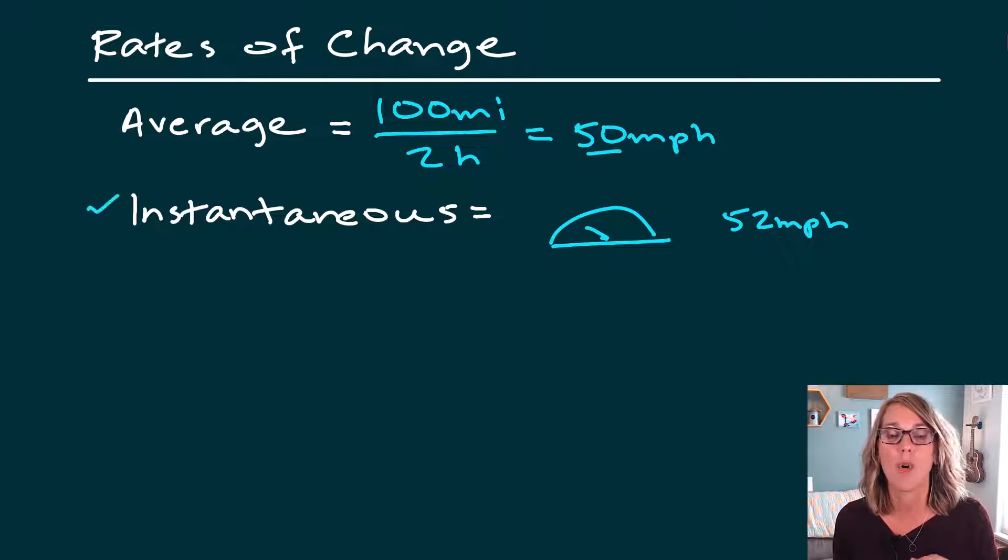So instantaneous is a moment in time. Average is going to be averaged over a period of time.